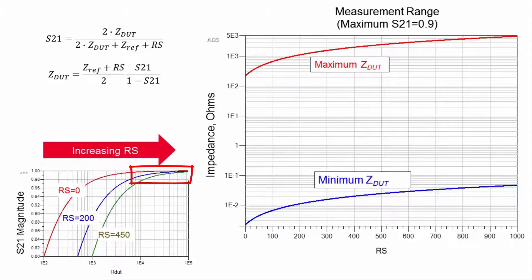The S21 measurement includes port impedance in the denominator, noted here as Zref. And so increasing the port impedance of the instrument reduces S21, allowing higher impedance measurements to be performed.